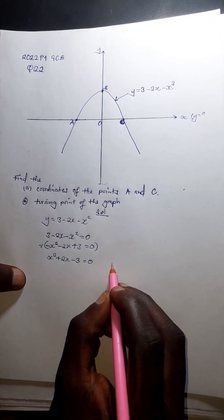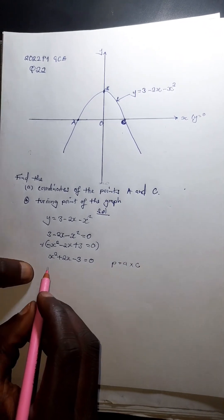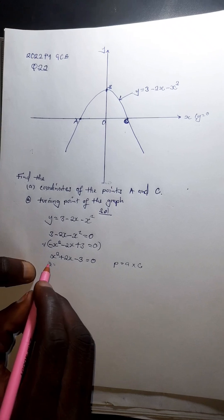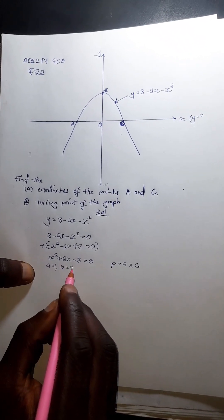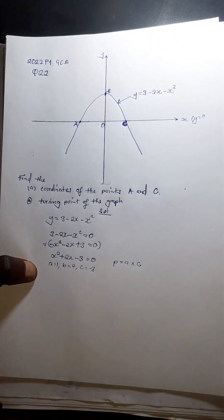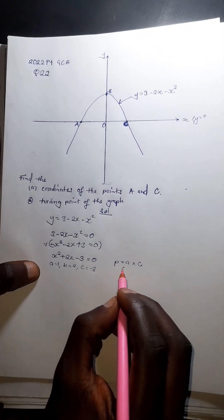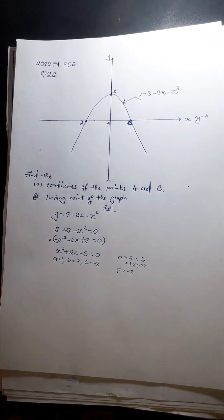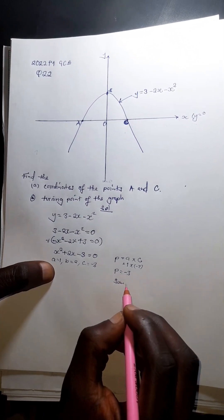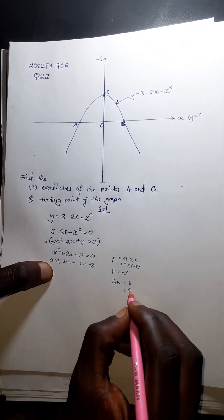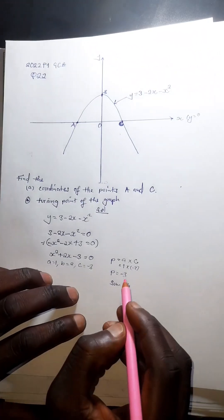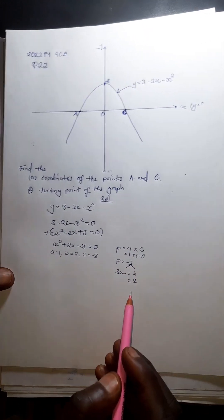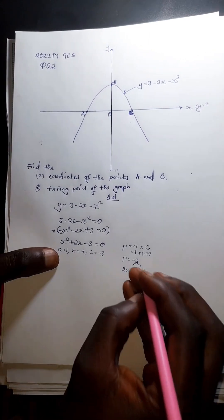Now we factorize using the quadratic method. We find the product of a and c: a = 1, c = −3, so the product is −3. The sum equals b, which is +2. We need two numbers that multiply to −3 and add to +2.